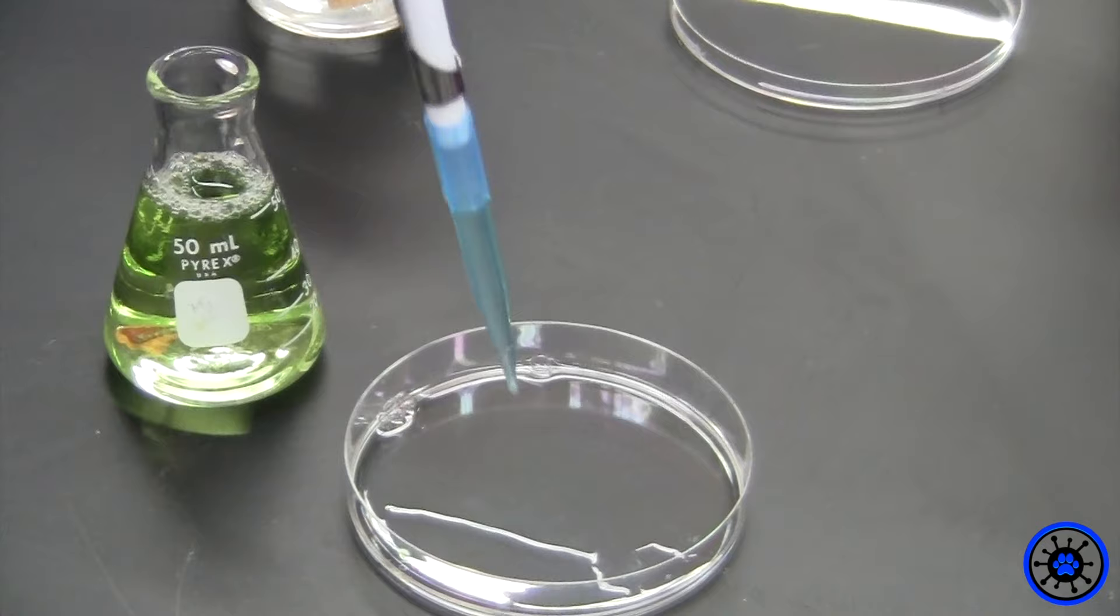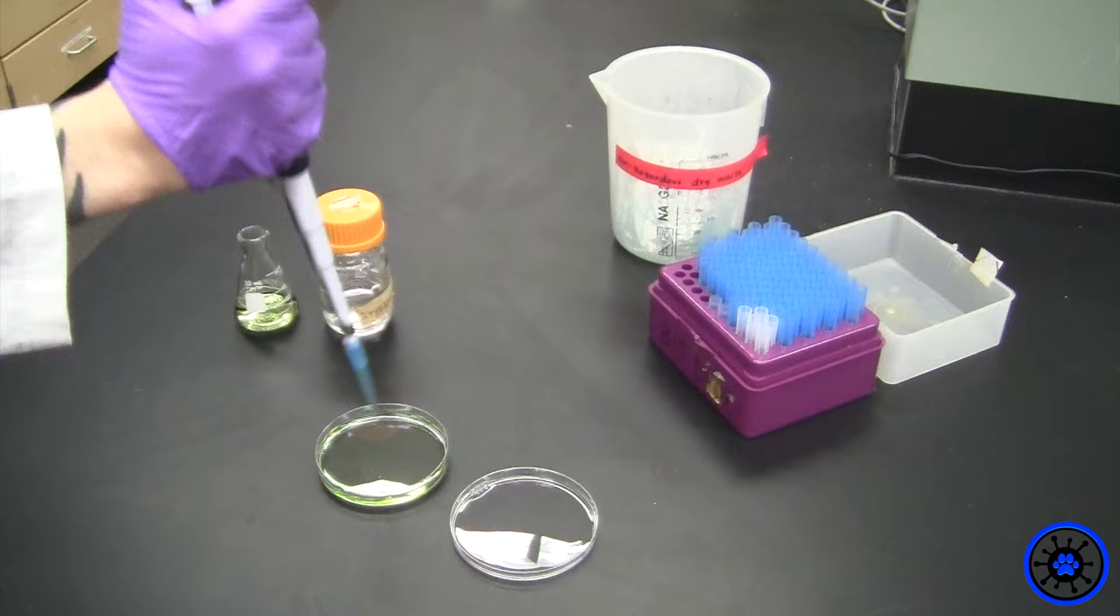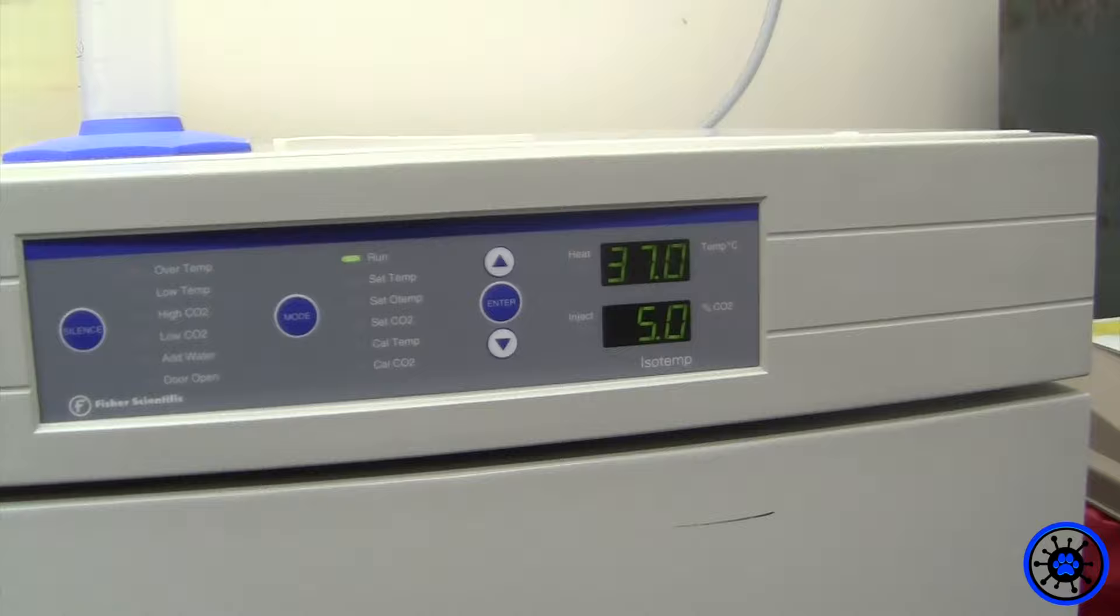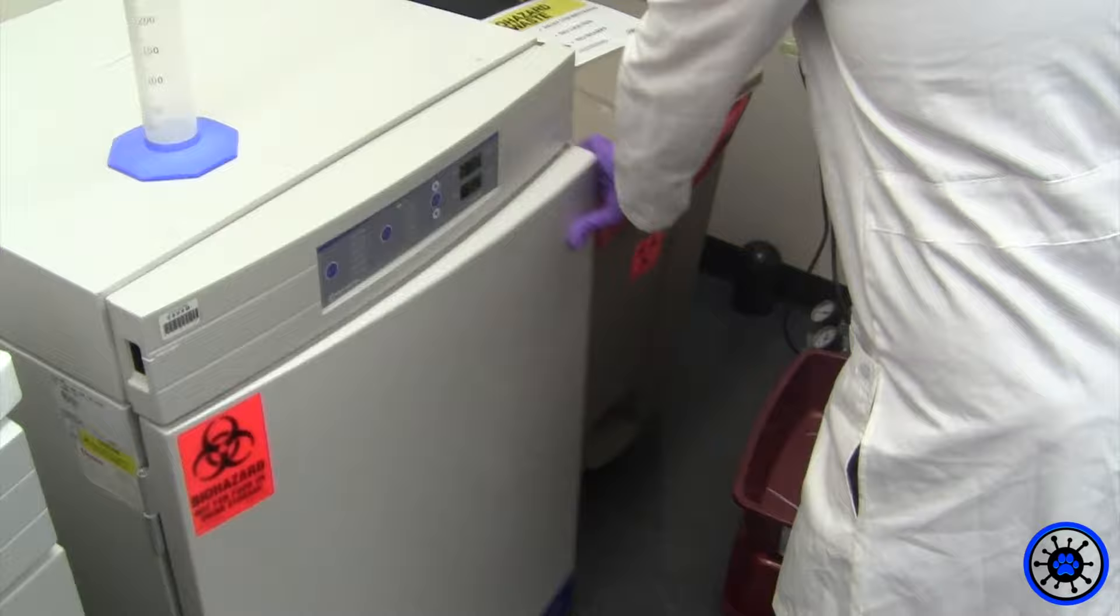They are then cleaned with PBS and have their adherence to the dish removed by trypsin. Then the suspended cells are passed to a new dish containing fresh media culture and left in an incubator at 37 degrees C and 5% CO2 until their next passing.